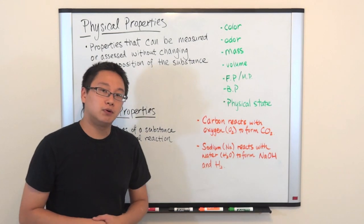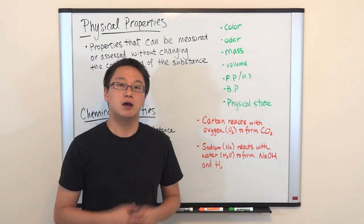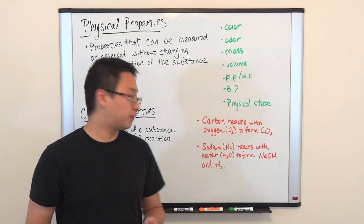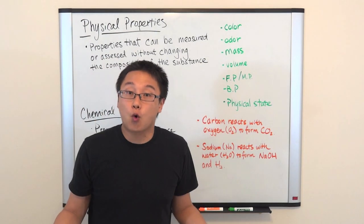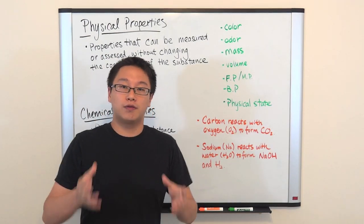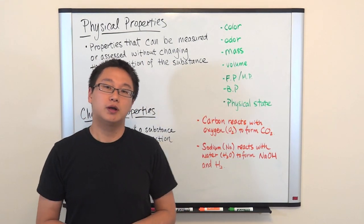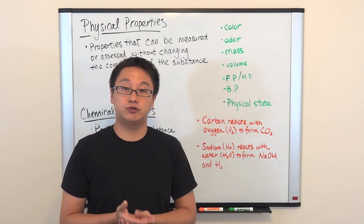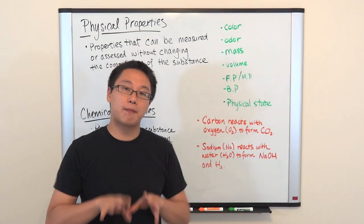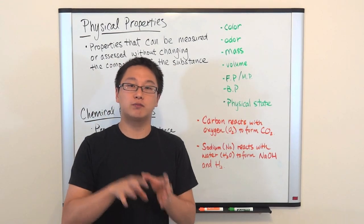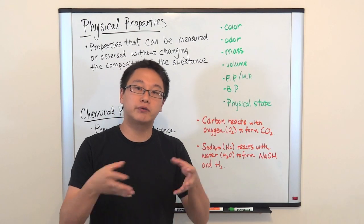Another example of a chemical property: sodium reacts with water (H₂O) to produce sodium hydroxide and hydrogen gas. This describes how sodium reacts with water and what happens in that particular reaction.